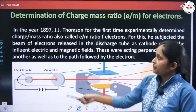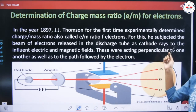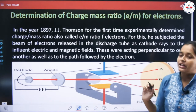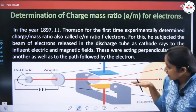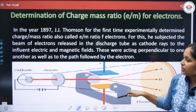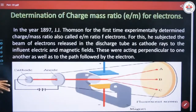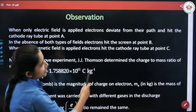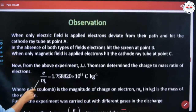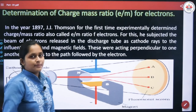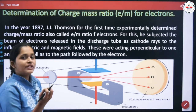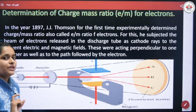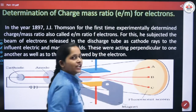He subjected the beam of electrons released in the discharge tube as cathode rays to the influence of electric and magnetic fields, which were acting perpendicular to one another. The first observation was that when only the electric field is applied, electrons deviate from their path and hit the cathode ray tube at point A — towards the positive plate.